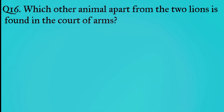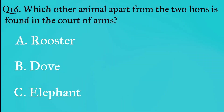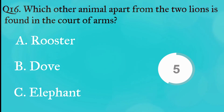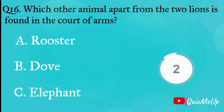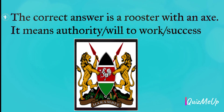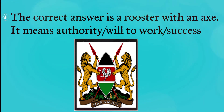Question 16: Which other animal apart from the two lions is found in the coat of arms? A: Rooster, B: A dove, C: Elephant. The correct answer is a rooster with an axe — it means authority, will to work, or success.